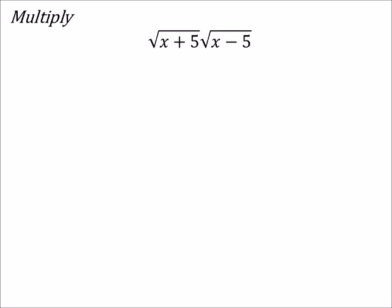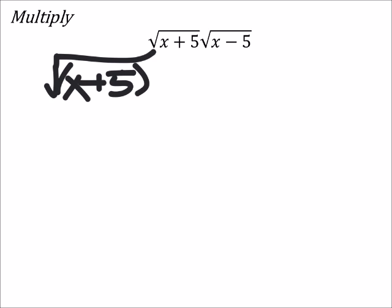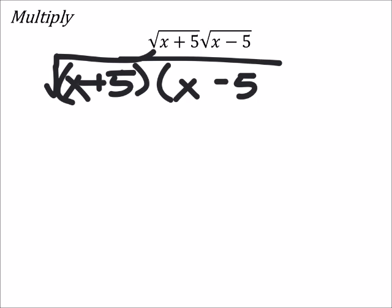So I'm just going to take the square root of x plus 5. I'm going to put that in parentheses though, because now I'm going to be multiplying that by x minus 5. So I have this quantity here, these two binomials being multiplied together.